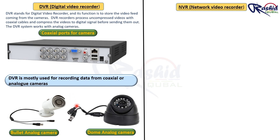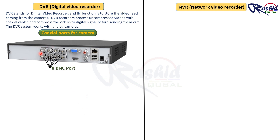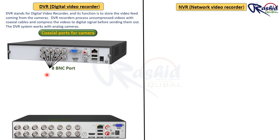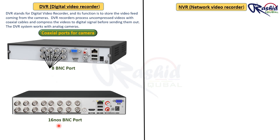The DVR system works with analog cameras. These 8 ports are used to connect the video signal from BNC analog cameras to the DVR. This DVR has a capacity to connect 8 cameras, while another DVR has 16 ports, meaning it has a maximum capacity of up to 16 cameras. Based on your requirement you can purchase a DVR.